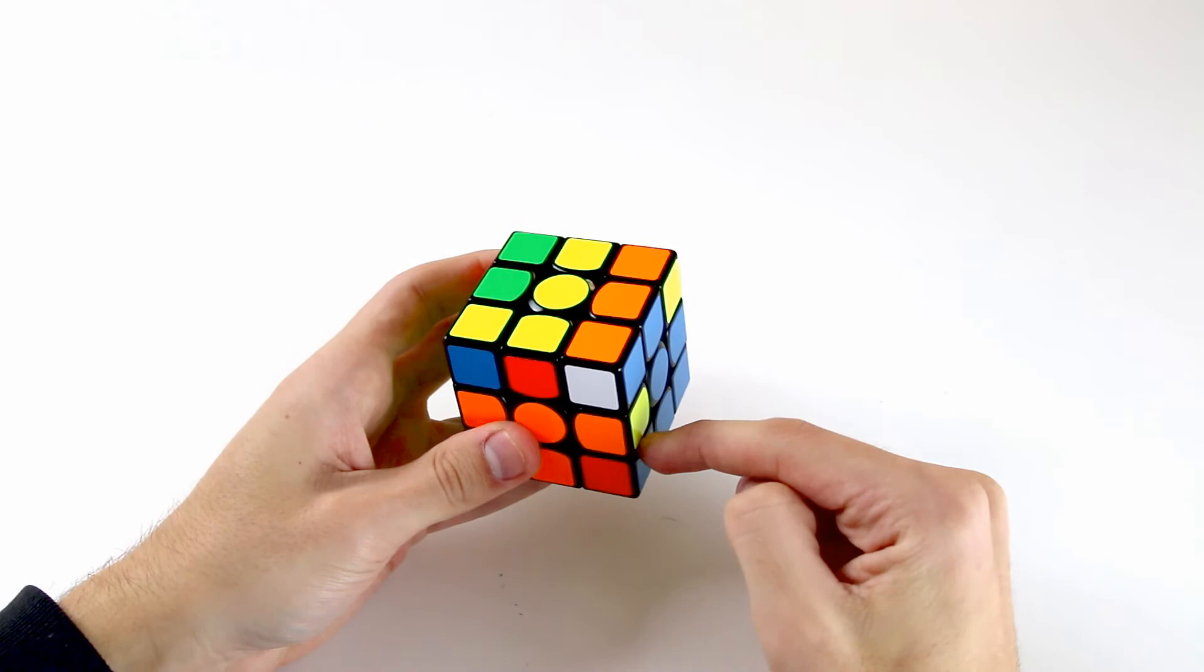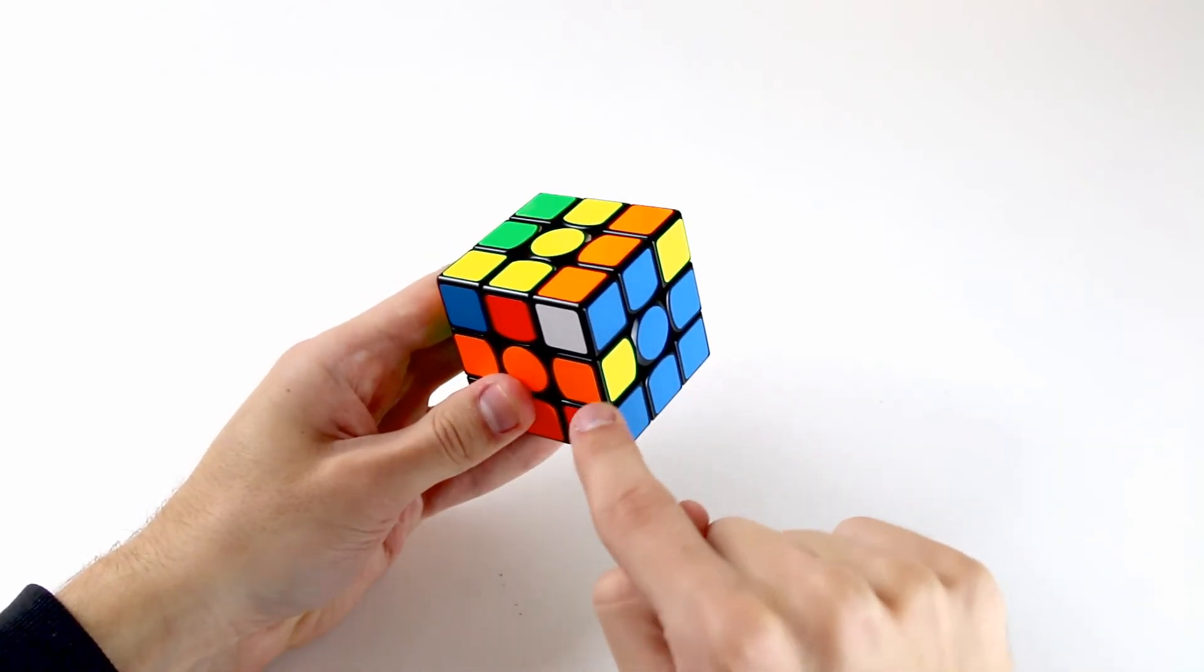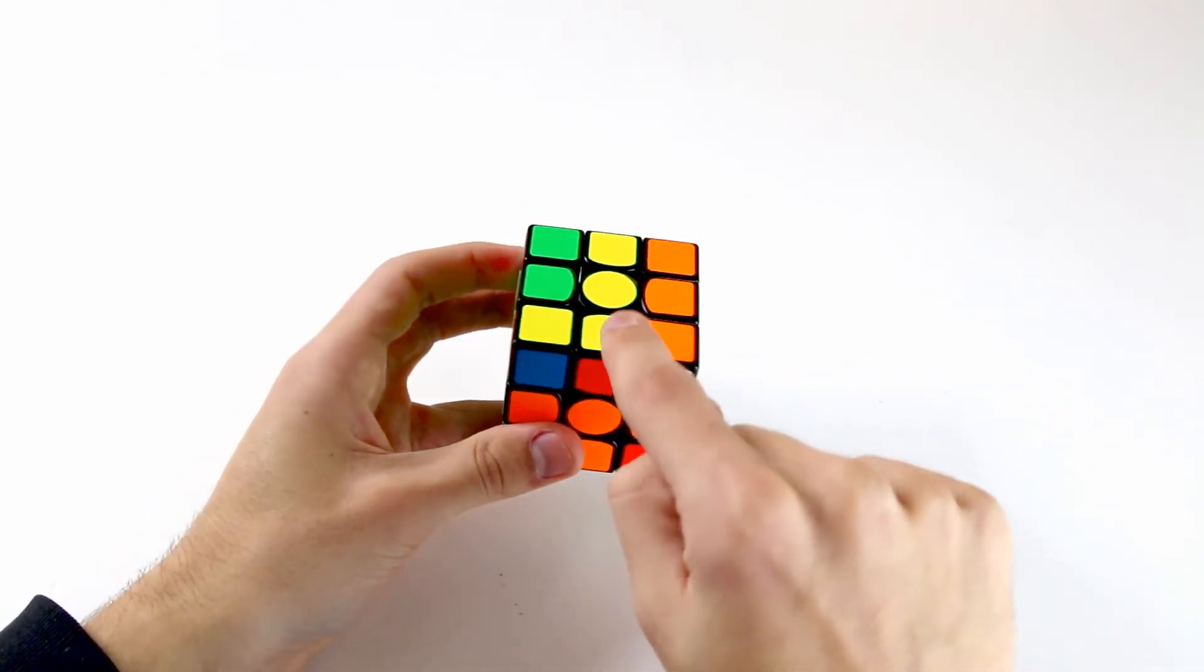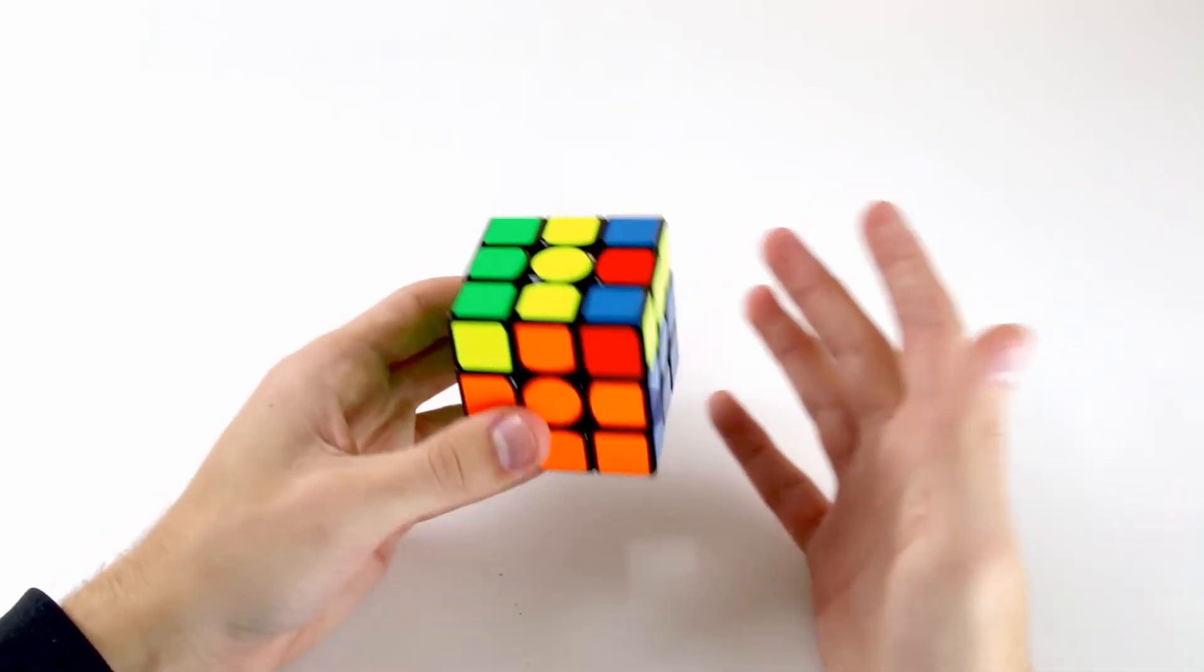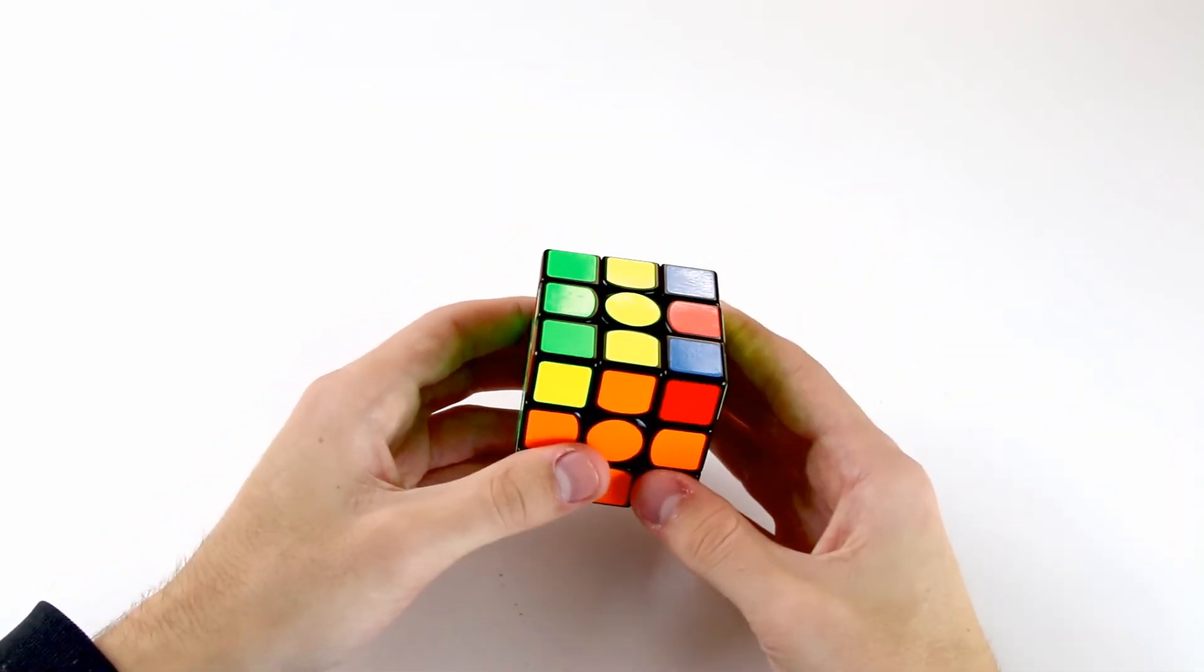However if we do an R', F, R, F', that'll just change this one from being misoriented to oriented and this one from oriented to misoriented. So there'll be barely any difference and you'll still have an OLL with only two edges oriented.